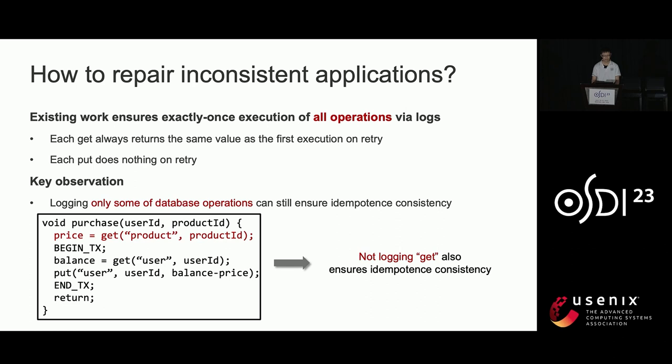Finally, I will introduce how to use verification to repair non-idempotent applications. Existing work such as Beldi and Boki ensures exactly-once execution of all operations via logs, so each get always returns the same value and each put does nothing on retry. However, Beldi and Boki introduce heavy performance overhead. Our key observation is that logging every operation is not equivalent to idempotent consistency—logging only some operations can also ensure idempotent consistency. For example, in the 'purchase' function, if we only log the transaction and do not log the get operation, idempotent consistency can still hold.